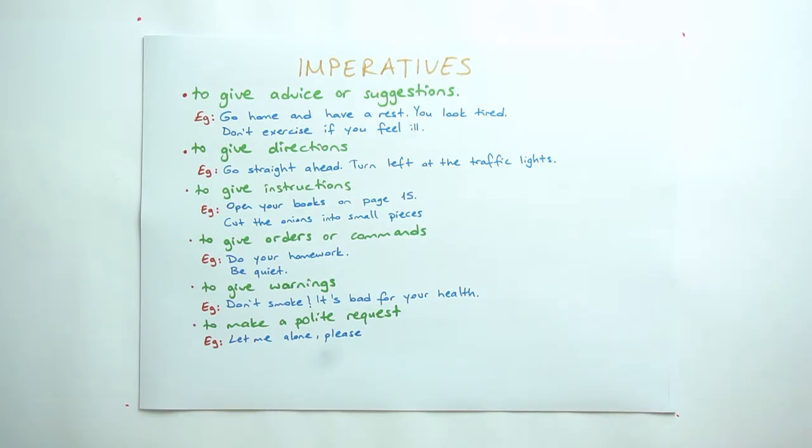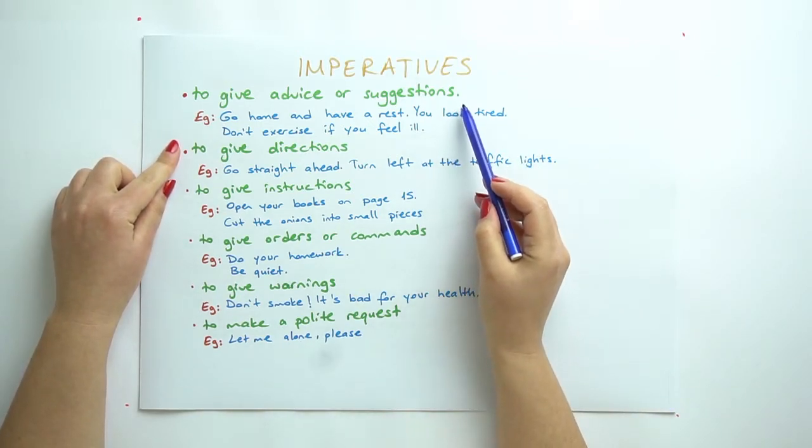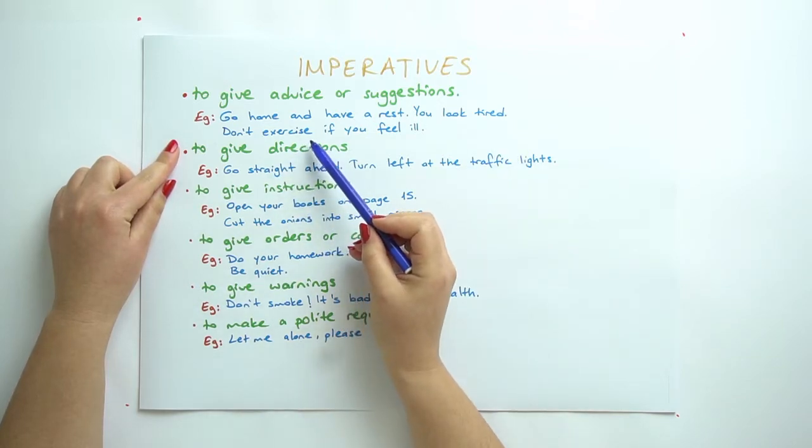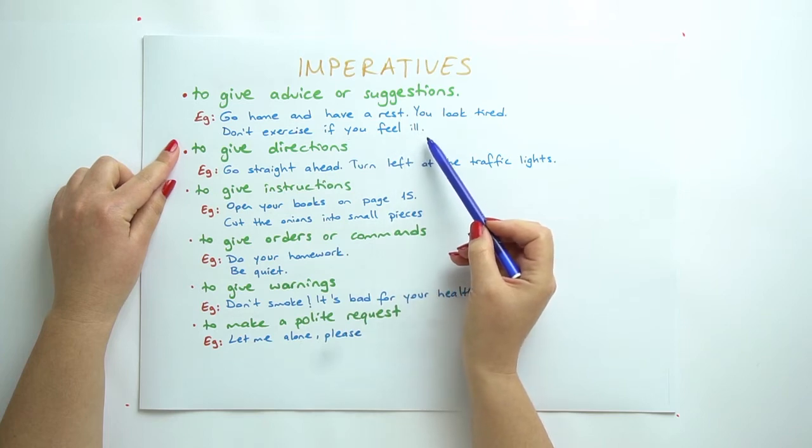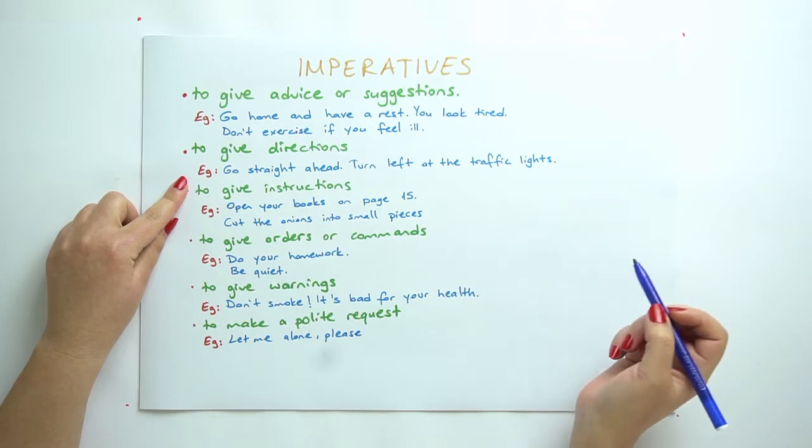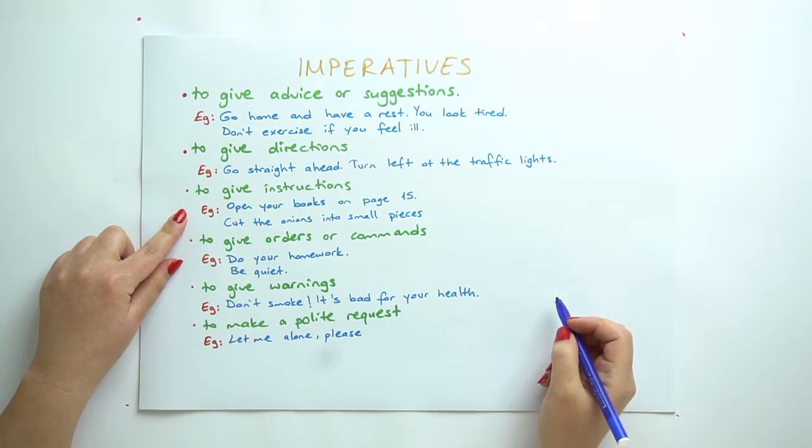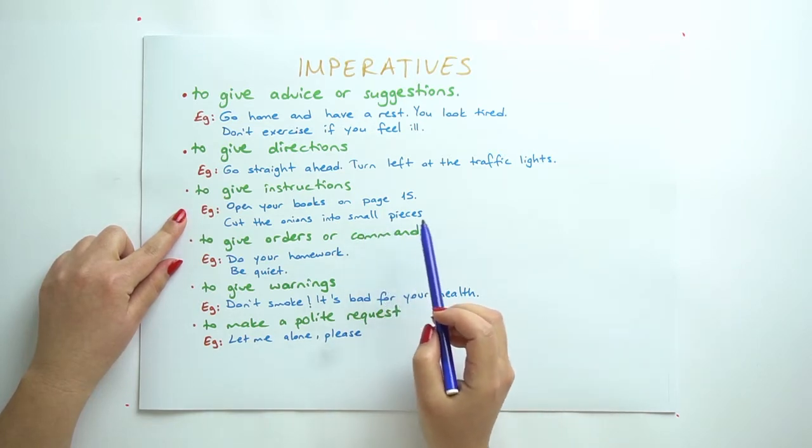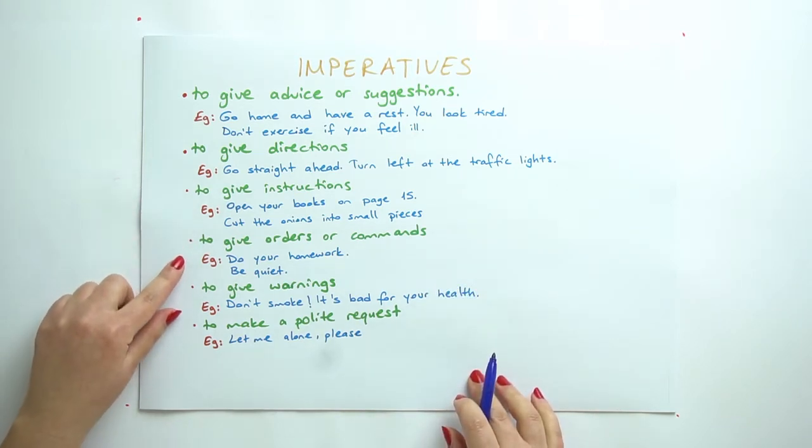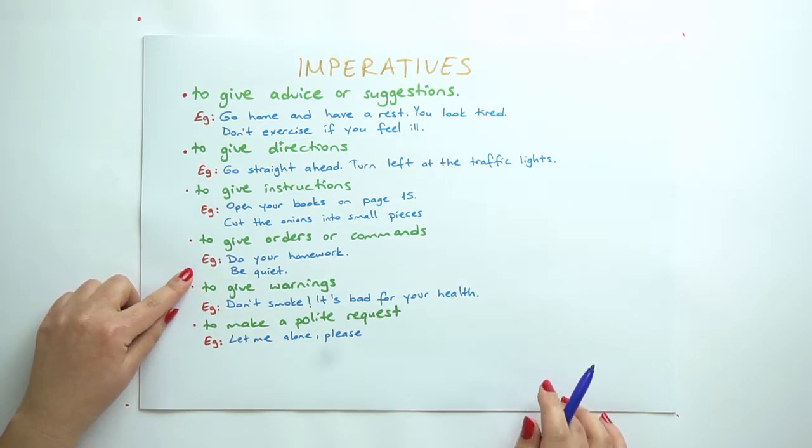Let's go on with the usage of imperatives. We use imperatives to give advice or suggestions, for example, go home and have a rest, you look tired. Negative: don't exercise if you feel ill. To give directions: go straight ahead, turn left at the traffic lights. To give instructions, for example, open your books on page 50 or cut the onions into small pieces. And to give orders or commands, this is do your homework, be quiet.